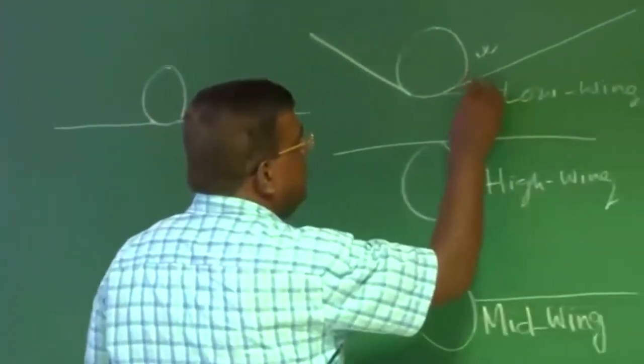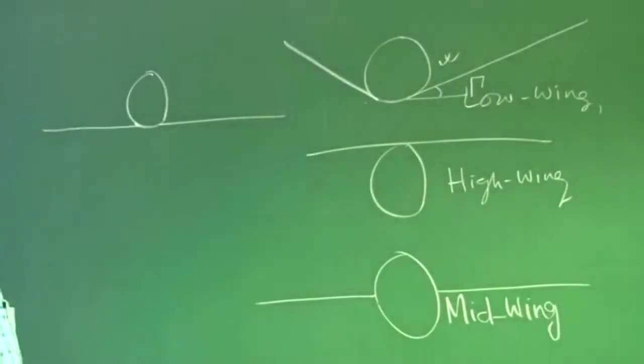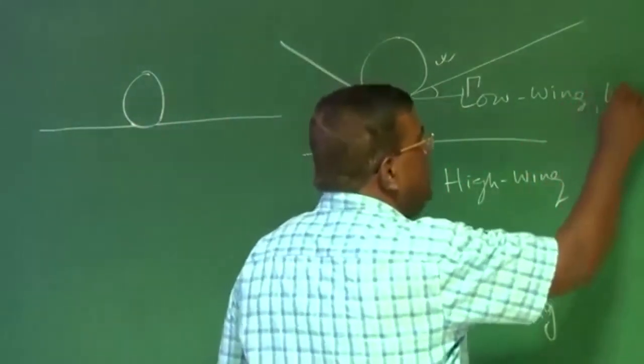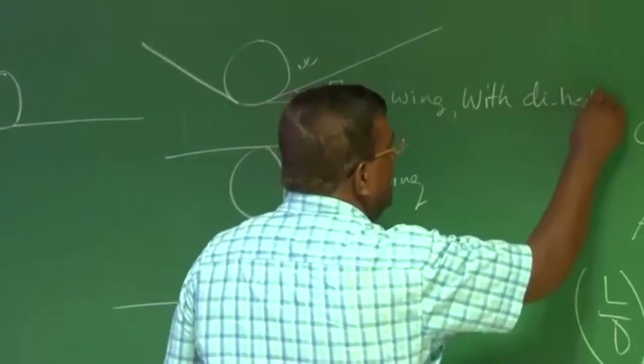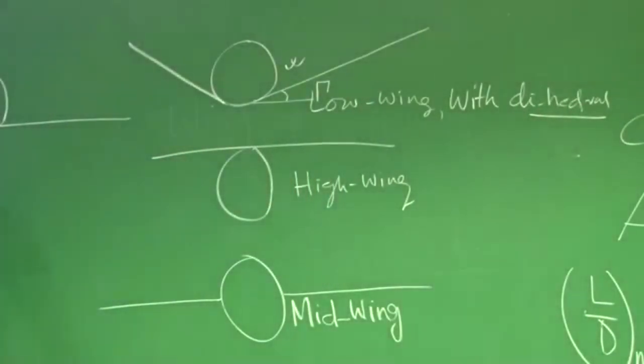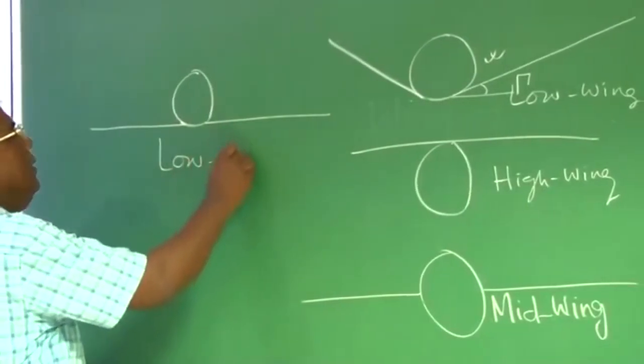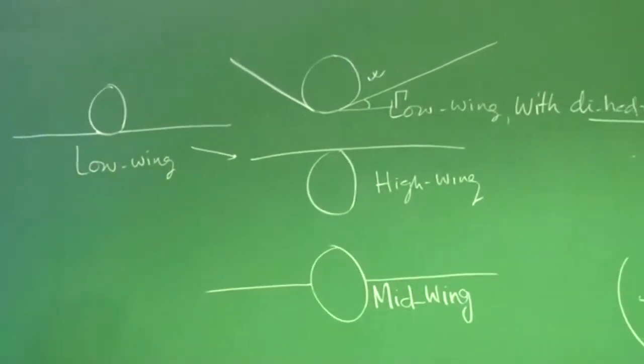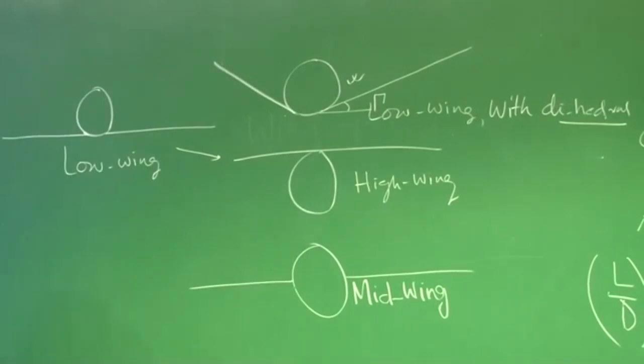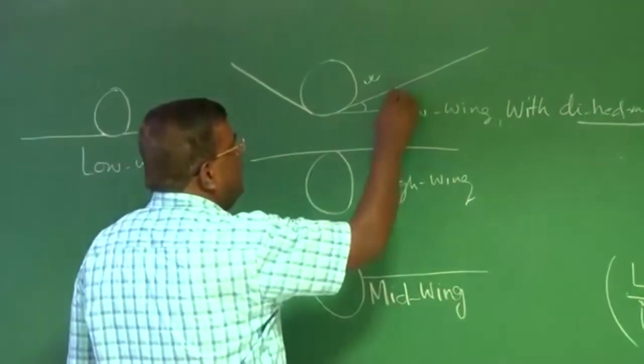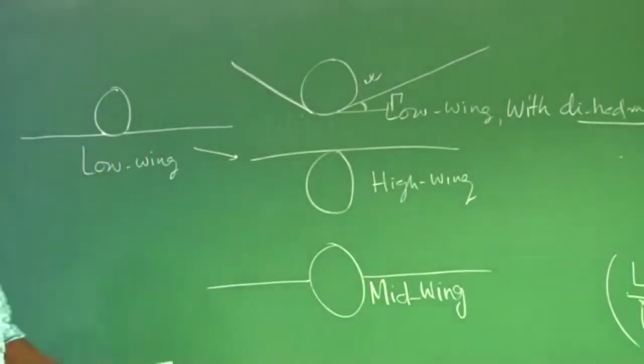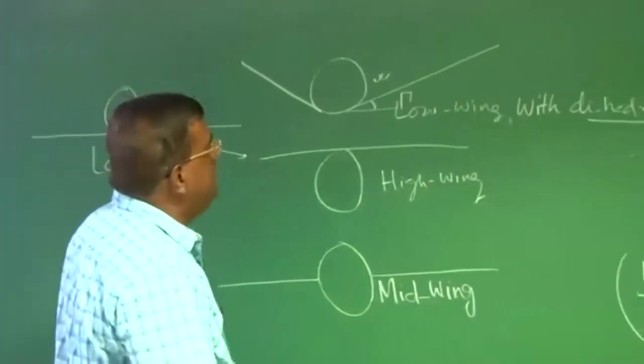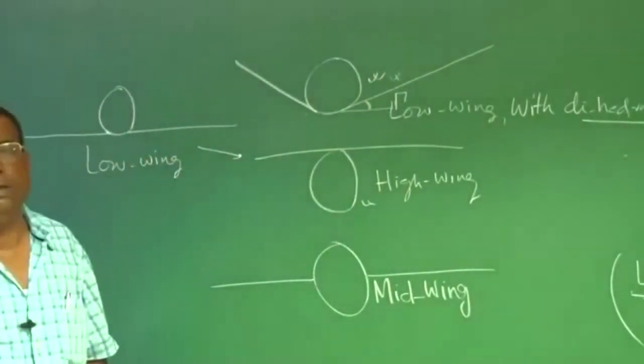But you will find, when I am saying low wing, typically I am meaning this. This is what laterally unstable. But here, some angle has been given. This is low wing. This is low wing with dihedral. And this angle is called dihedral angle.